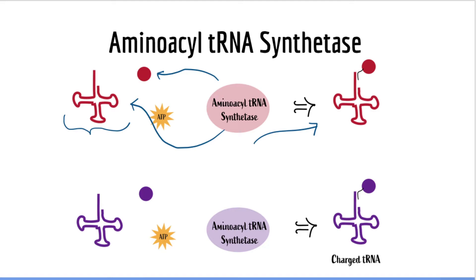Every single type of amino acid has its respective aminoacyl tRNA synthetase. So we can imagine that a different amino acid has its own tRNA and its own aminoacyl tRNA synthetase enzyme — the reaction is pretty much the same otherwise. Something to keep in mind is that the process of making proteins requires energy in the form of ATP and GTP. We will talk more about this on the next video.